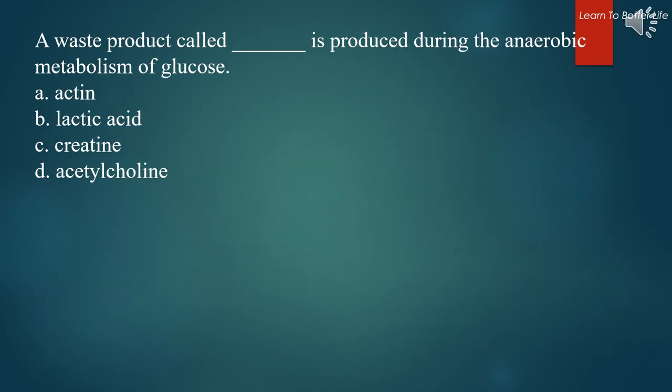A waste product called what, which is produced during the anaerobic metabolism of glucose? A. Actin. B. Lactic acid. C. Creatine. D. Acetylcholine. The answer is B. Lactic acid.